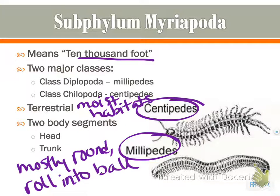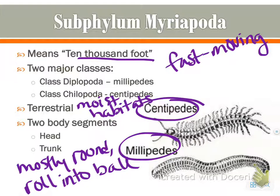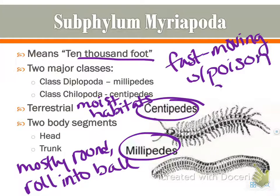Centipedes are fast moving. They typically have longer legs, those big antennae, and they actually have poison claws, although it's not enough to do damage to humans. And they are predators.